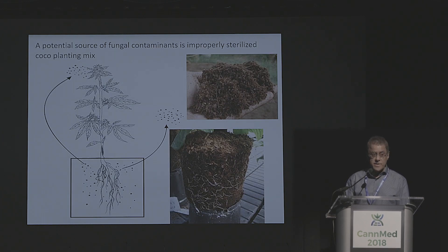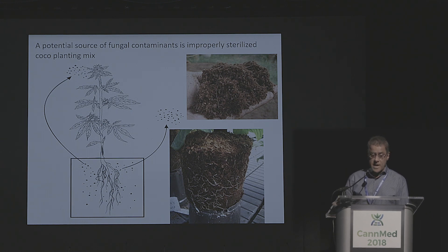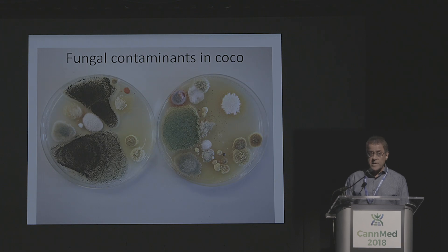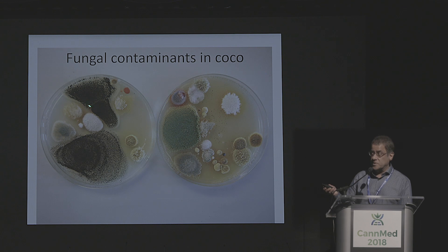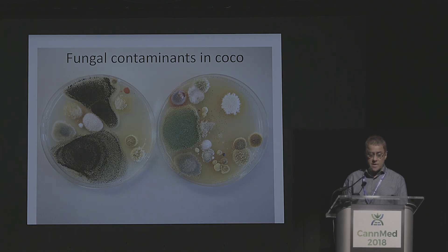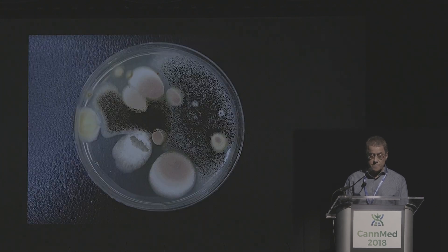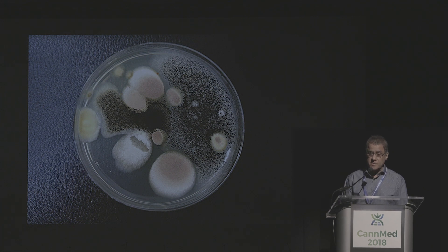We also wanted to look at the growing substrate. A lot of hydroponic growers use coco fiber or coconut husk-derived substrates, and we wanted to see whether these substrates contain microorganisms that could potentially spread into the air or onto the flowers. We were actually surprised — this is coco product that hasn't been autoclaved or sterilized, and there are a lot of organisms in there, particularly Aspergillus, Aspergillus niger, various Penicillium species, and other organisms. Aspergillus niger and Aspergillus tereus came from material from overseas that probably hasn't been sterilized, and actually contains fairly awful organisms with the potential to spread onto flowers.